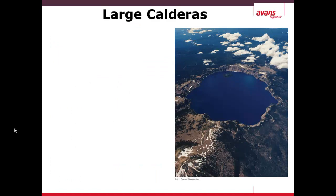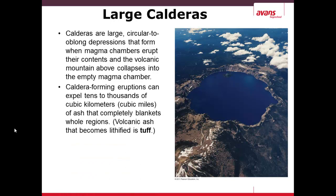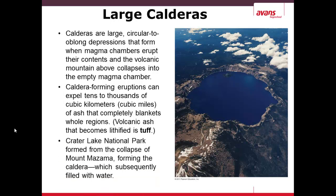Calderas are the largest of volcanoes. They are circular in shape. When they erupt, they often cause a depression after the eruption, and can sometimes, as shown in the picture on the right, fill with water. They can expel tens of thousands of cubic kilometers of ash, which can completely blanket an entire region. When this ash lithifies or turns into rock, it's called tuff. An example is Crater Lake National Park, which formed through the collapse of Mount Mazama.